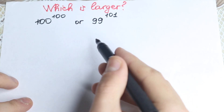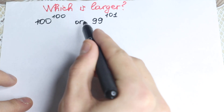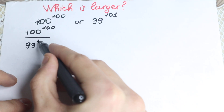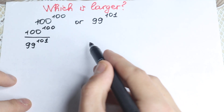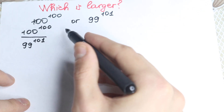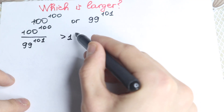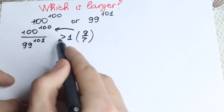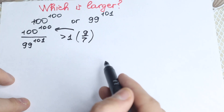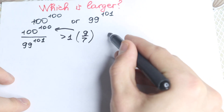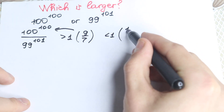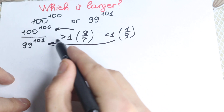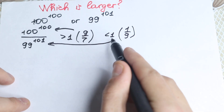Take a look at this approach. First of all, let's divide the left hand side by the right hand side. So we have 100 to the power 100 over 99 to the power 101. If the result of this division is greater than 1 — for example, 9 over 7 is greater than 1 — then we can say our numerator is greater. If the answer is less than 1 — for example, a fraction like 1 over 9 — then our denominator is greater. So two cases: if the division is greater than 1, or if the division is less than 1.